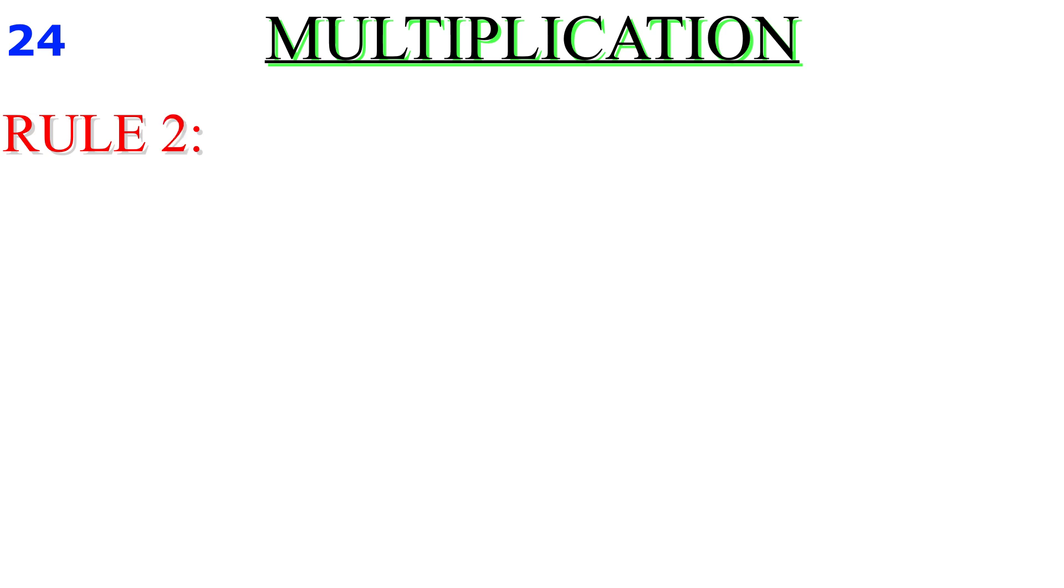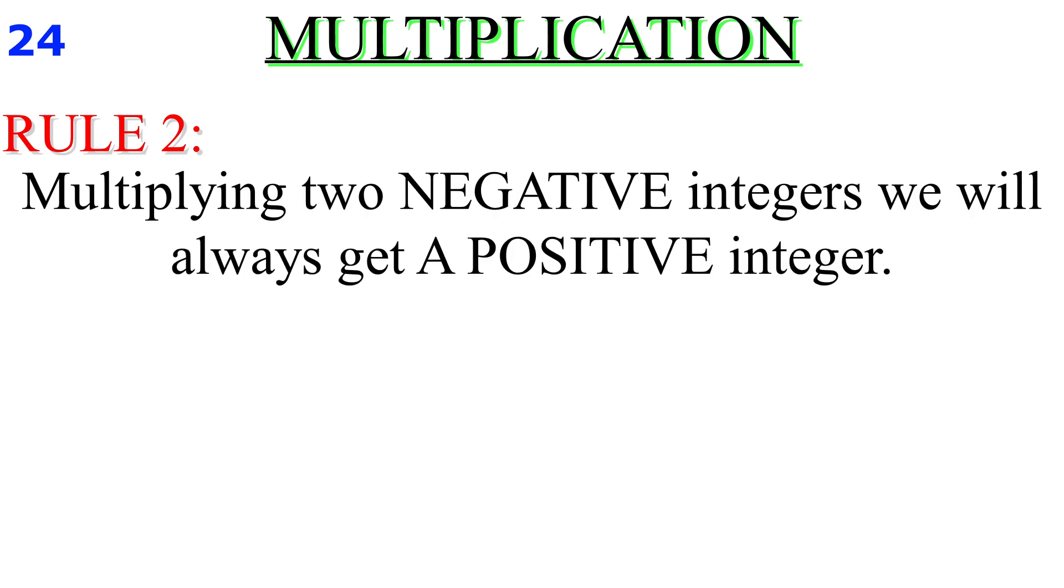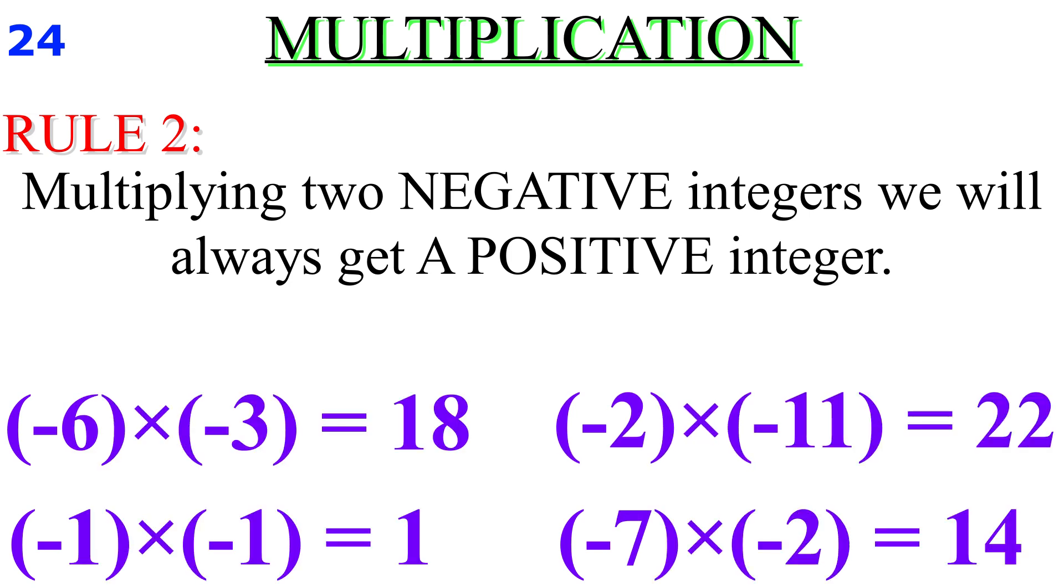Rule number two: multiplying two negative integers always results in a product that is a positive integer.